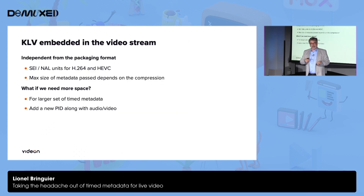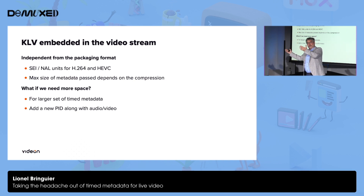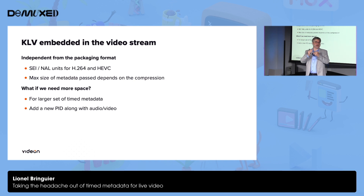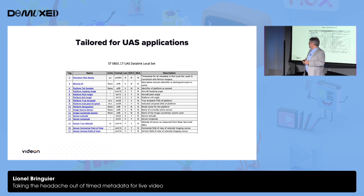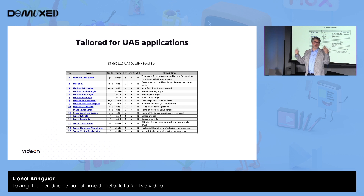KLV metadata is embedded in the video stream, and you have two ways of doing that across the big chain from the camera down to the player. You can embed it in the SEI or NALU information, though the limitation is you may be constrained by megabytes of content and the bitrate of your compression codec. Or you can use a new PID alongside the audio and video PIDs — a dedicated metadata PID where you put that information in. It was defined and tailored for drone applications, and there are hundreds of data types already classified and used by the whole industry.